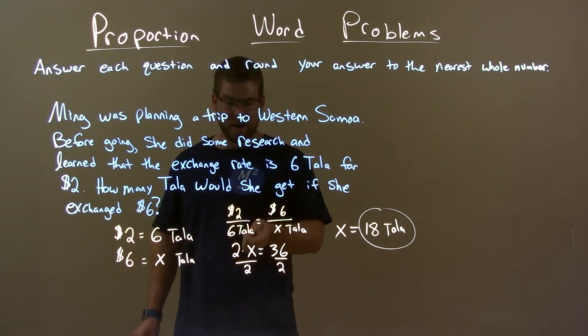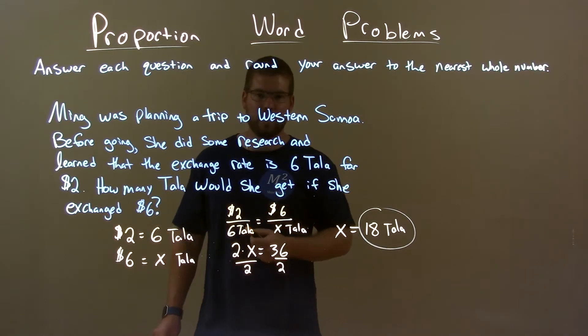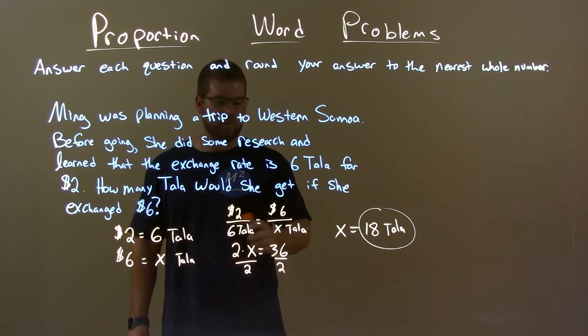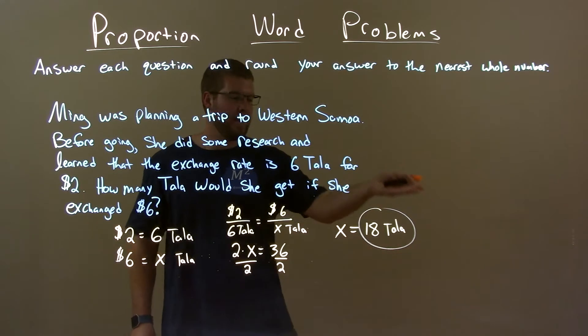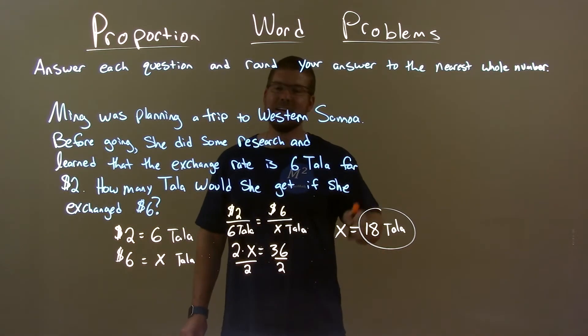Two dollars over six talas equals six dollars over x talas and solve for x. Cross multiply, got x by itself, and so our final answer here is just 18 talas.